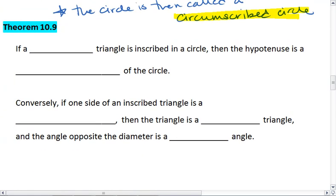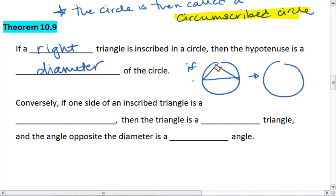If a right triangle is inscribed in a circle, then the hypotenuse is a diameter of the circle. This is a special case. It tells us that if we have a right triangle, then AC is a diameter.